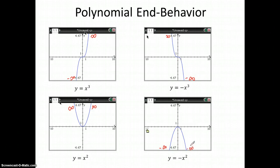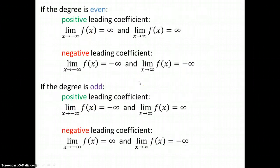This is actually not going to be too difficult to remember. You just have to remember these original ones and know that if you have a negative leading coefficient, it's going to completely flip your end behaviors. So let's summarize this.